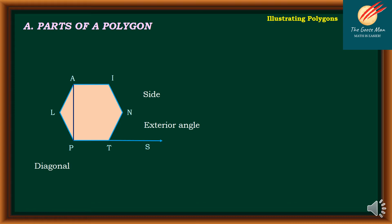Let's move on to the parts of a polygon. Consider the polygon PLAINT. We have points P, L, A, I, N, T — these are what we call the vertices. Singular: vertex.